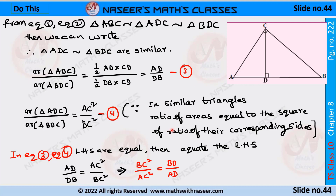We know that in similar triangles the ratio of areas equals the square of the ratio of their corresponding sides. So for triangle ADC and triangle BDC, the ratio of their areas equals AC square by BC square. Let this be equation 4. From equations 3 and 4, since both left-hand sides are equal, we can write AD by DB equals AC square by BC square, which gives BC square by AC square equals BD by AD.